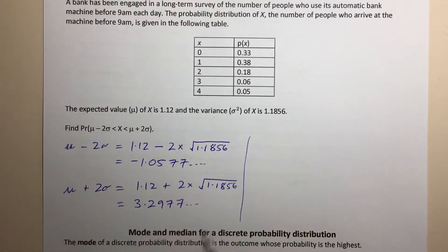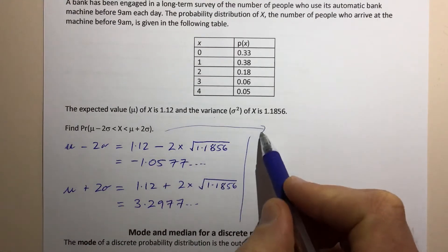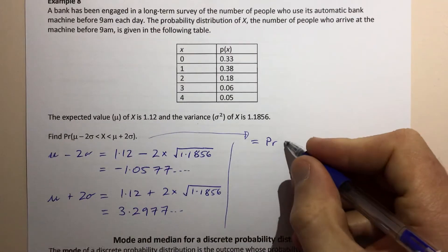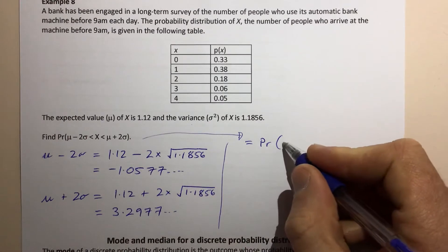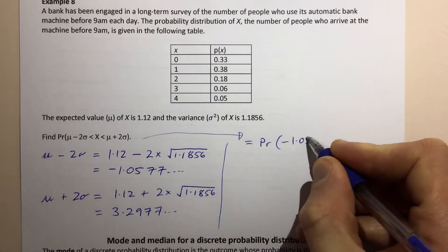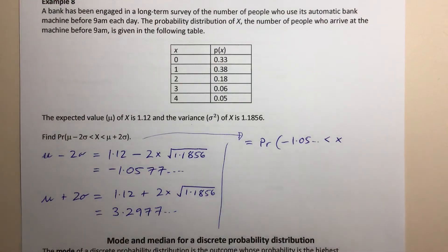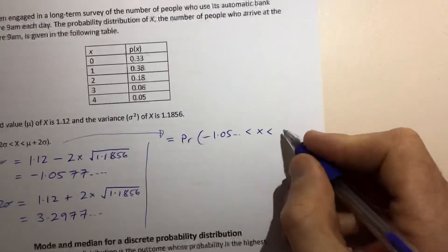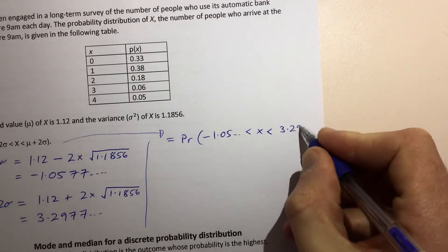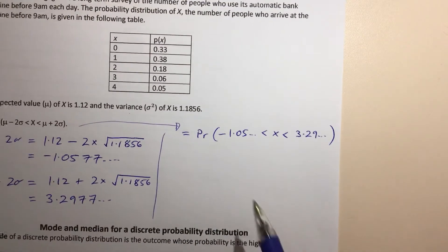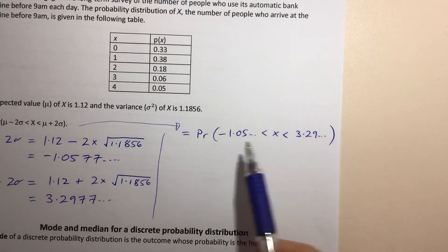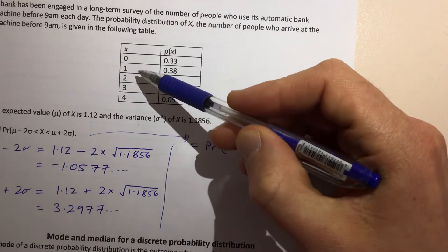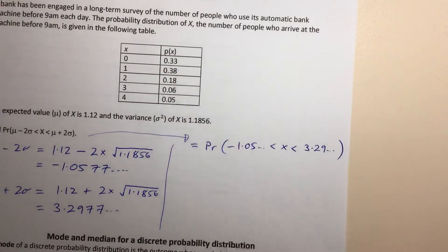From that, this probability we're being asked to find is really equal to the probability that X is greater than negative 1.05 but less than 3.2977. Now, those values are values that X can't actually take — remember that X can only take values 0, 1, 2, 3, or 4. It's a discrete variable.